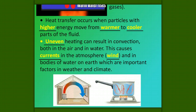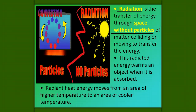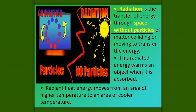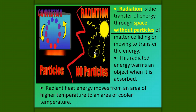Our third type of heat transfer is radiation. Radiation is the transfer of energy through space without particles of matter colliding or moving to transfer this energy. This radiated energy warms an object when it is absorbed. Radiant heat energy moves from an area of higher temperature to an area of cooler temperature all on its own, traveling through space — think of the sun's rays radiating toward us.